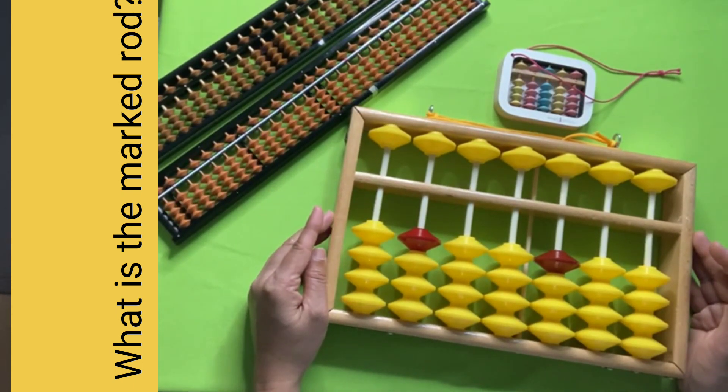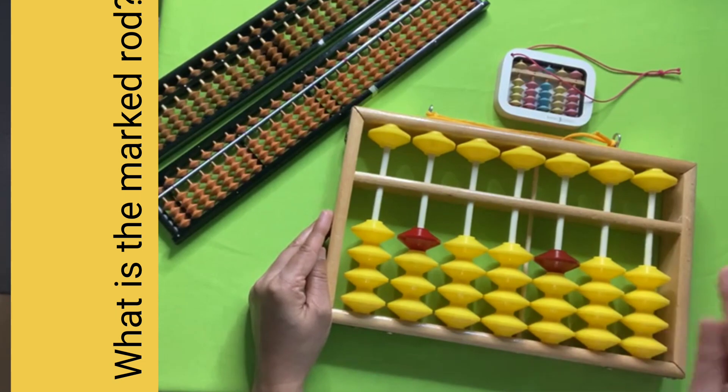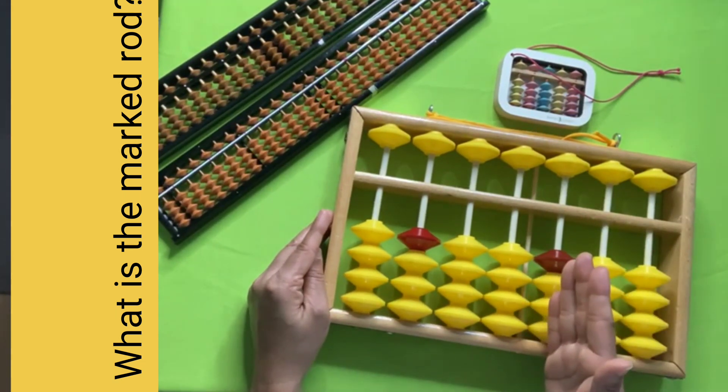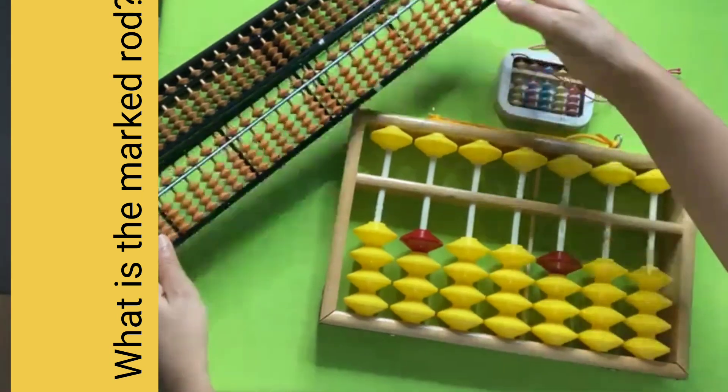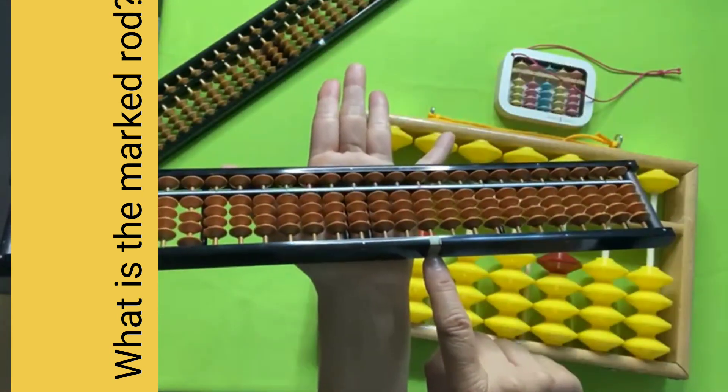What is the marked rod? The rod from where you start to do your calculation is called the marked rod. In this abacus, my marked rod is this one. I'm starting from here. In this abacus, I passed a small piece of paper here, and this is my marked rod.